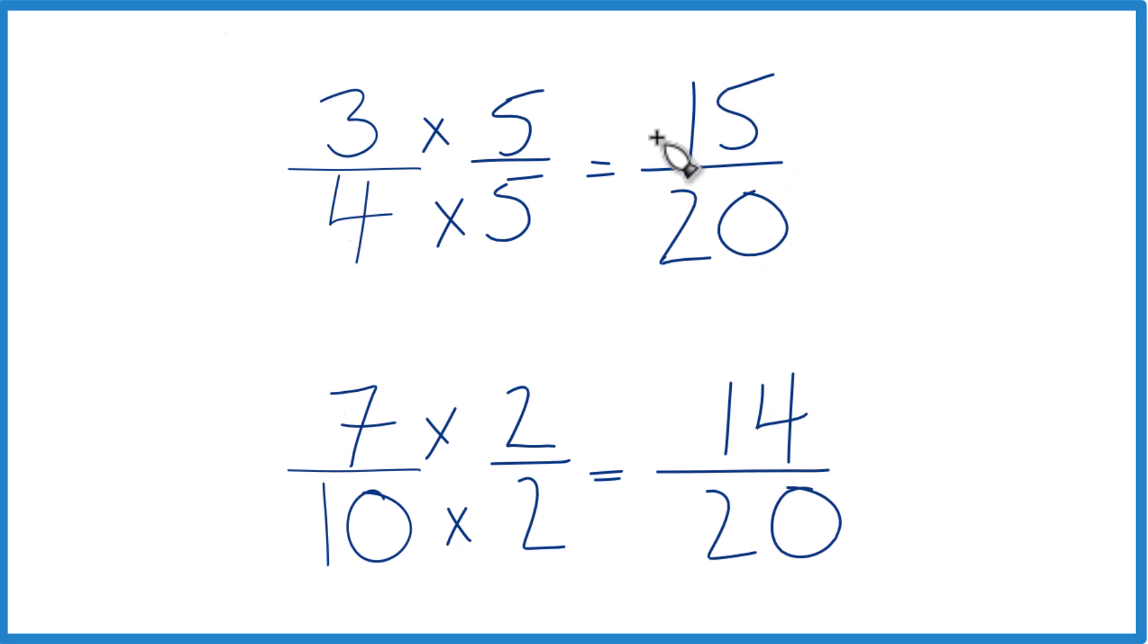And 15 is larger than 14. So 15 twentieths is larger than 14 twentieths. Only by 1 twentieth, but it's still larger. Since these are equivalent here and here, 3 fourths is going to be larger than 7 tenths.